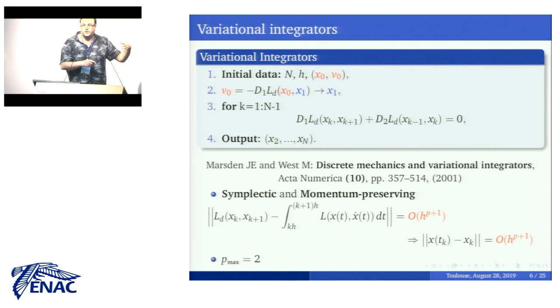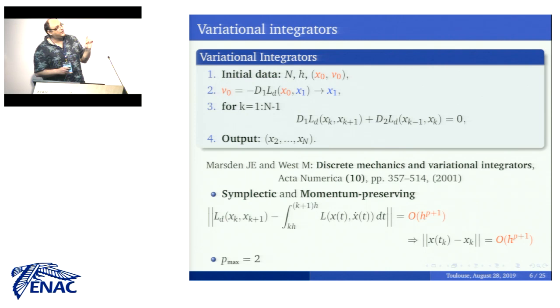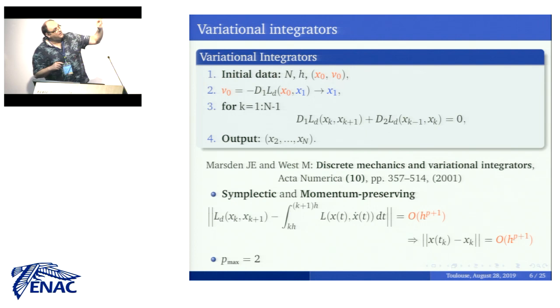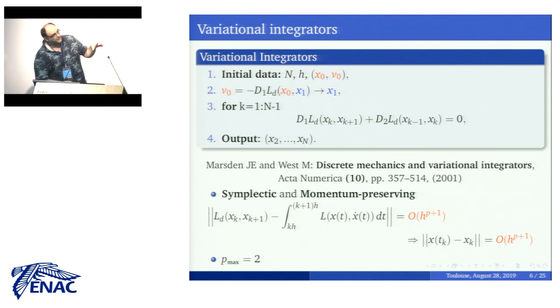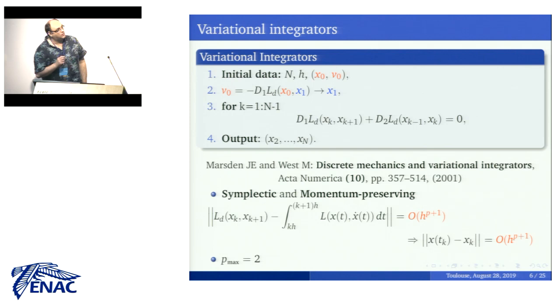This is what we call variational integrators, because we have obtained these equations through a variational procedure. These are interesting because of their nice geometric properties such as symplecticity, momentum preservation, and the presence of symmetries. Symplecticity moreover ensures nice behavior in the long term in terms of energy. The order of accuracy of our discrete approximation of the continuous dynamics, p, is determined by how well we approximate our action by means of the discrete Lagrangian.